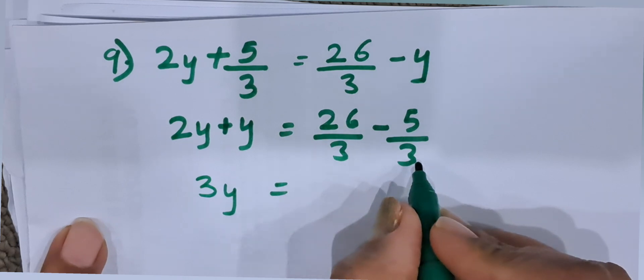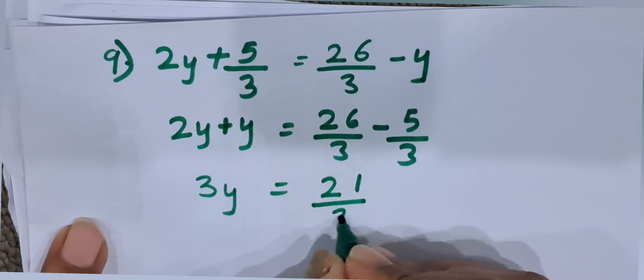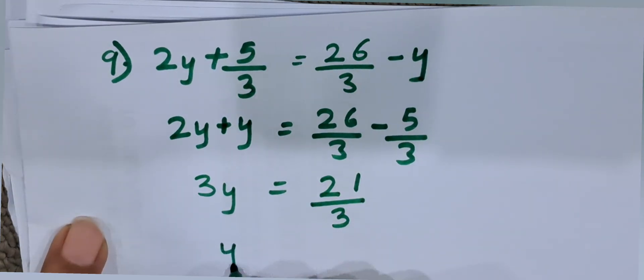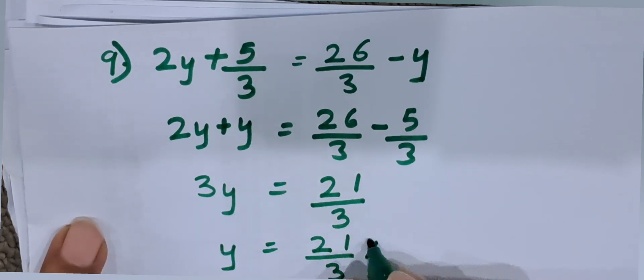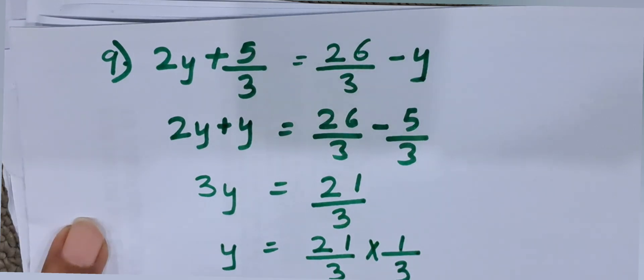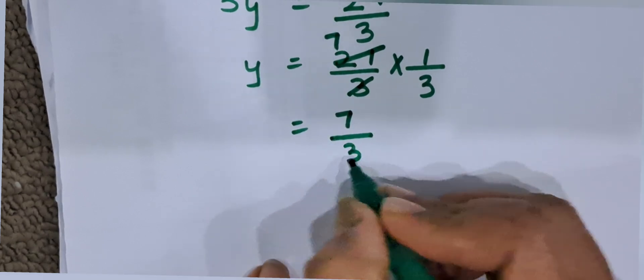2y plus y is 3y. Since the denominators are the same, we can easily subtract. 26 minus 5 is 21, so it is 21 by 3. So, y becomes 21 by 3 divided by 3, which gives 1 by 3. So, 21 by 3 into 1 by 3 — 3 sevens are 21 — the value of y is 7 by 3.